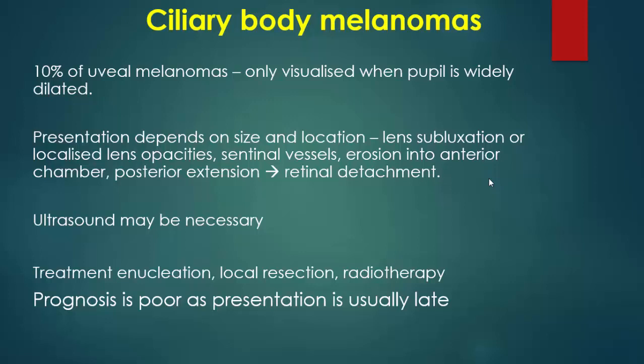Ciliary body melanoma represents 10 percent of cases of uveal melanoma and is only visualized when the pupil is widely dilated. Presentation depends on size and location and can include lens subluxation or localized lens changes, sentinel vessels, erosion into the anterior chamber, and with posterior extension can cause retinal detachment. Ultrasound is very essential here. Treatment is by enucleation, local resection, and radiotherapy. Prognosis is poor as presentation is usually late.